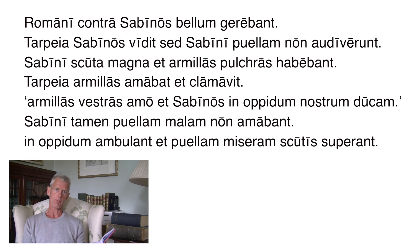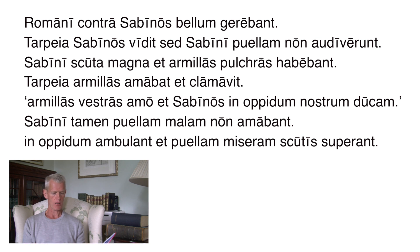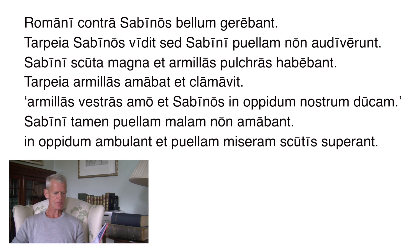She took a fancy to the bracelets the Sabine soldiers were wearing on their arms and said she wanted them. When the soldiers came into the city they did give her the bracelets, but they also gave her the other things on their left arms — enormous heavy shields — and they threw the heavy shields at her and crushed her. Now let's look at the Latin passage: Romani contra Sabinos bellum gerebant. Tarpeia Sabinos vidit sed Sabini puellam non audiverant. Sabini scuta magna et armillas pulchras habebant. Tarpeia armillas amabat et clamavit: armillas vestras amo et Sabinos in oppidum nostrum ducam. Sabini tamen puellam malam non amabant. In oppidum ambulant et puellam miseram scutis superant.